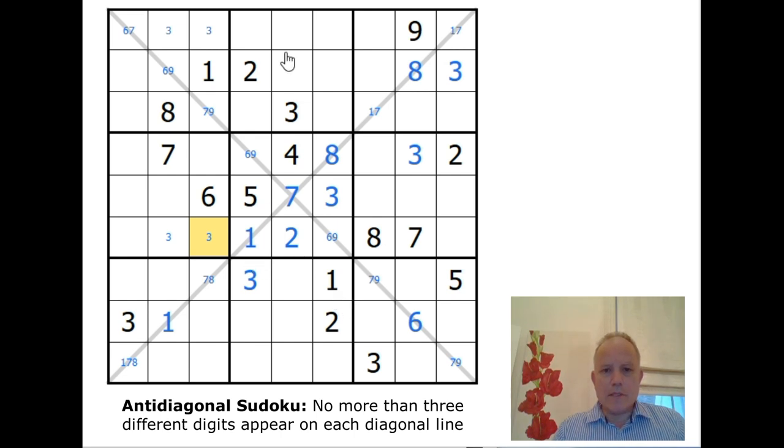One in the central boxes must be up here, and that resolves our seven-one pair there. That resolves our seven-nine pair down here. That resolves our seven-eight pair down here. This can't be a seven, it must be a six. So we've got the lines, both diagonal lines complete apart from this six-nine pair in the middle still.